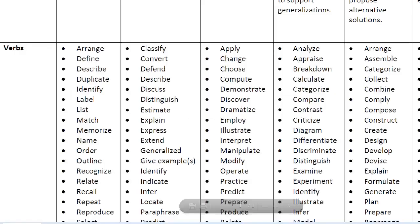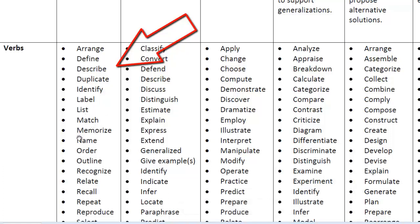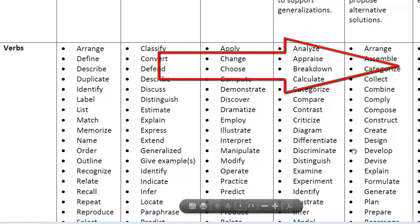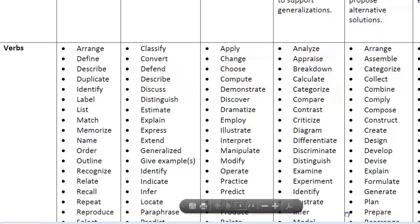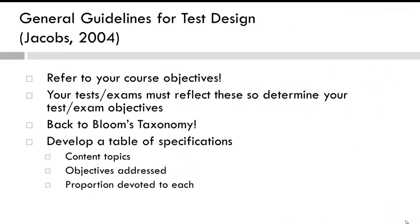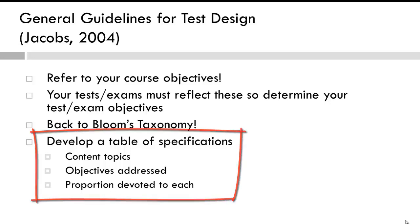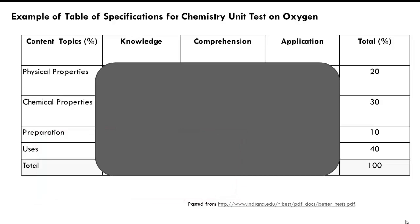Let's go back to Bloom's. The resources from previous weeks could help you in creating test items. If most of your test items contain verbs such as those listed in the Recall or Remember column, you might want to ensure that your instruction and test items address higher cognitive processes, such as analyzing or evaluating. Jacobs also stresses the importance of creating test items that are proportional to the content topics and learning objectives taught. This is sometimes referred to as a table of specifications.